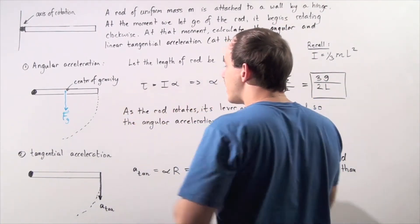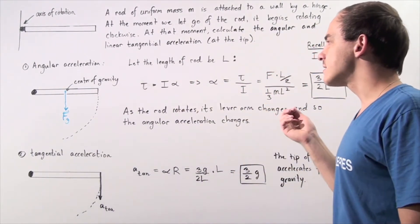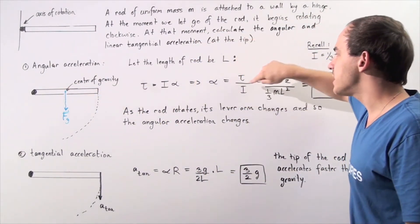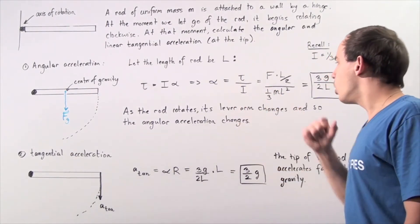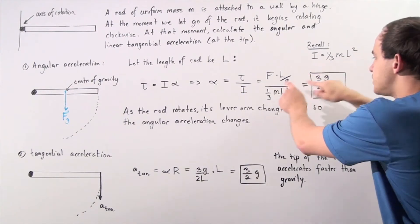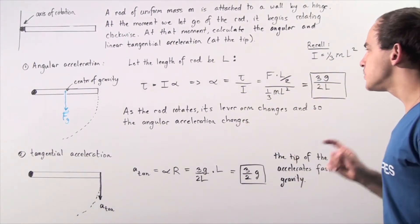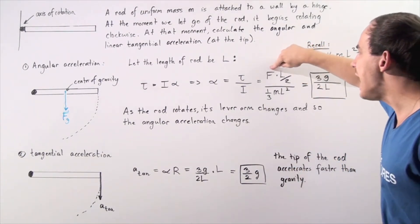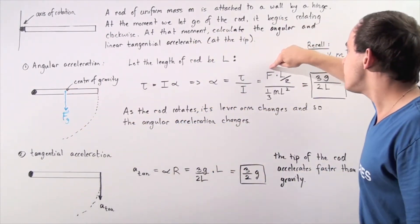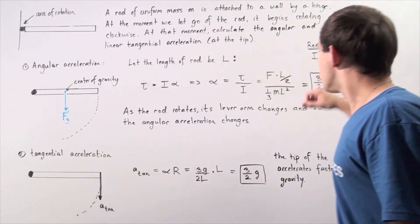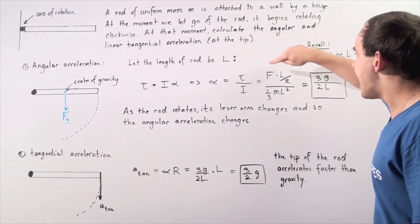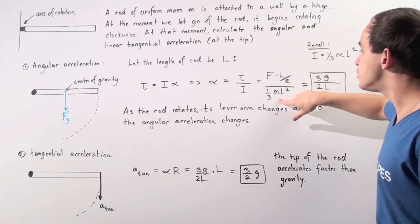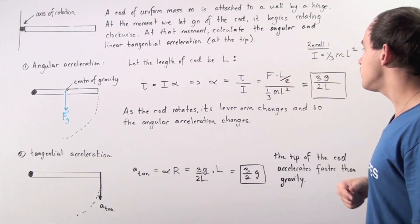Let's rearrange this equation and solve for alpha, our angular acceleration. Angular acceleration is equal to the torque divided by the moment of inertia. The moment of inertia is given by one third ML squared, so we substitute this in. Then we substitute M times G times the lever arm, L divided by 2 — since F is simply the force of gravity, M times G, and F multiplied by the lever arm gives our torque. Notice that M appears at the top and bottom, so they cancel. We have one L at the top and L squared at the bottom, so we cancel one of the Ls.